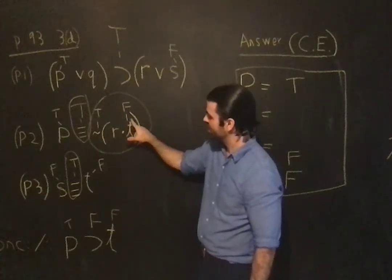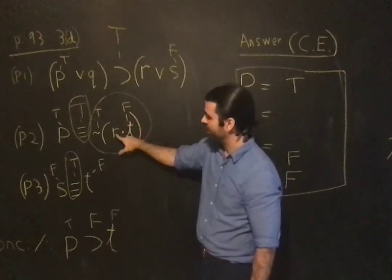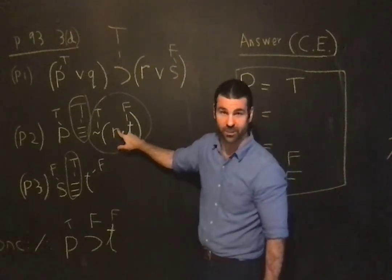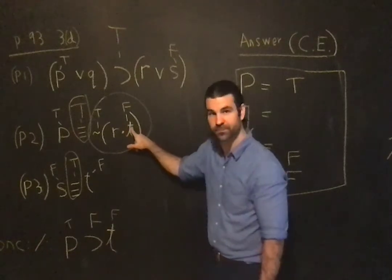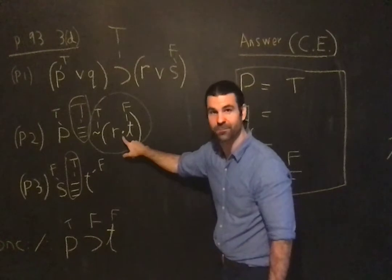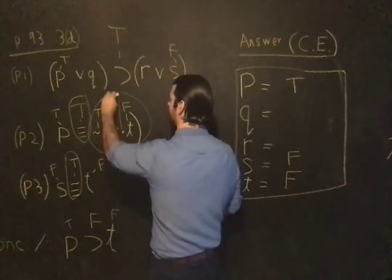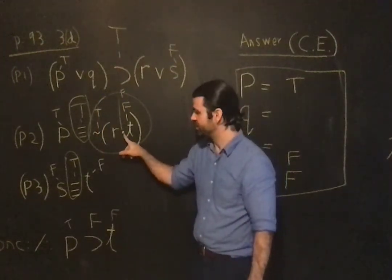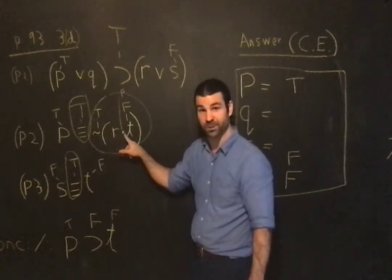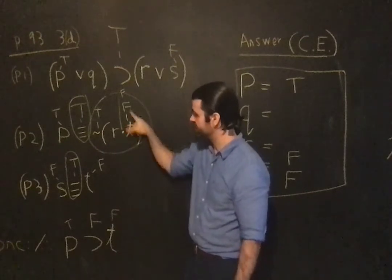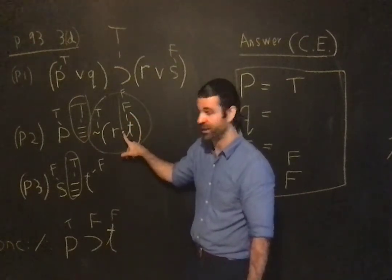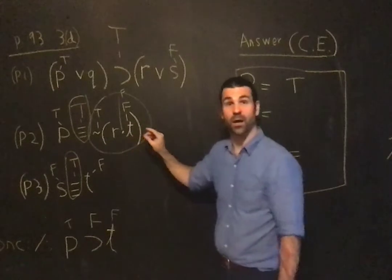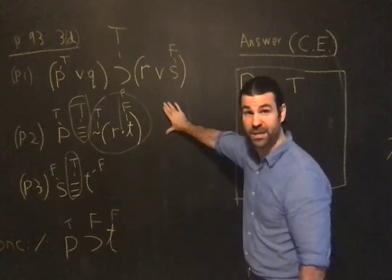Notice that the only other variable is R here, but I don't actually need to determine anything about R. T is false, and T's falsity suffices for the falsity of the conjunction. If R is true, the conjunction is false; if R is false, the conjunction is false. T's falsity suffices for that being false, and that's what it has to be for the negation to be true. So I've already satisfied keeping premise 2 true.